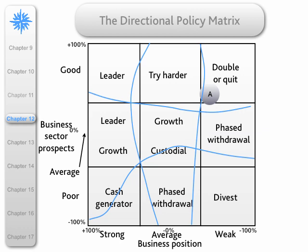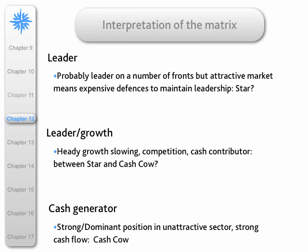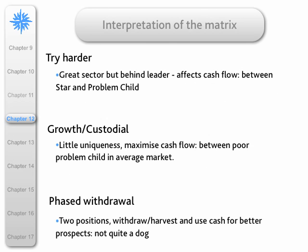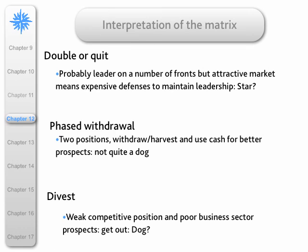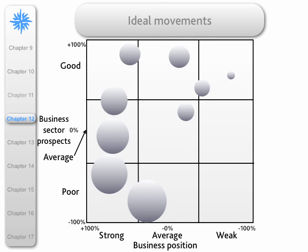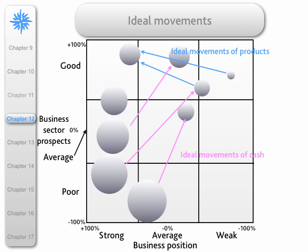These are the interpretations of each cell: the leader, leader/growth, cash generator, try harder, growth/custodial, phased withdrawal, and the final ones are double or quit, phased withdrawal, or divest. We also have in the DPM similar ideal movements of products, and here is the ideal movement of cash to fund the products of the future.